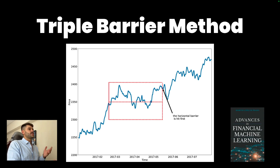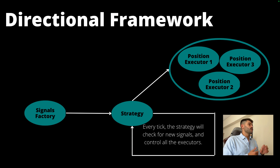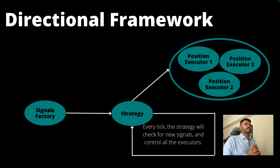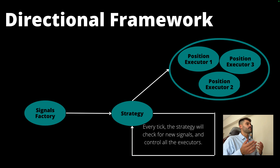Each signal can have different take profit and stop loss levels. When the signal arrives with the position config, we create a position executor that follows execution from start to end. The end can be: the take profit gets executed, the time limit is reached and we have to close the position, or we trigger a stop loss. We can have multiple executors running at a time. This is the introduction of smart components like the position executor, which can handle custom logic in a very easy way.